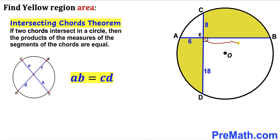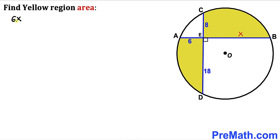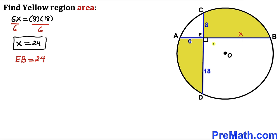Let's focus on this given problem. Let me label segment EB as X. Then according to this theorem, the product of 6 and X is going to be equal to 8 times 18. So 6 times X equals 8 times 18. Dividing both sides by 6, our X value turns out to be 24 units. So segment EB is 24 units.